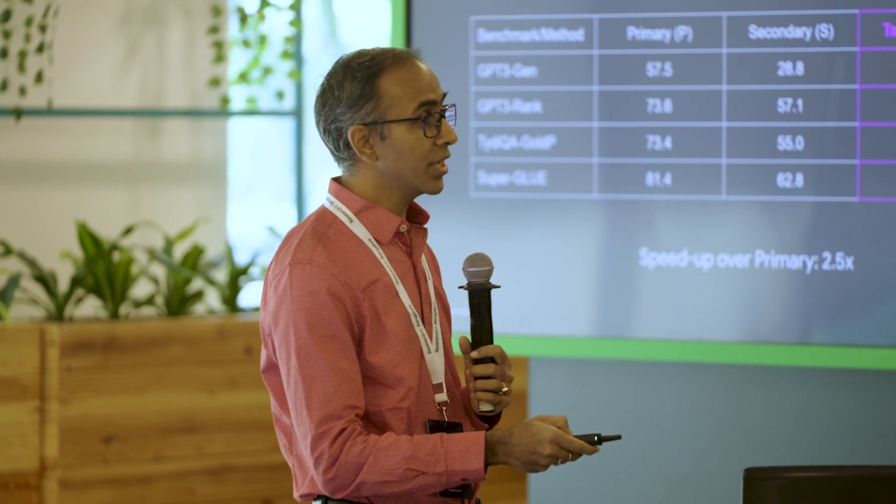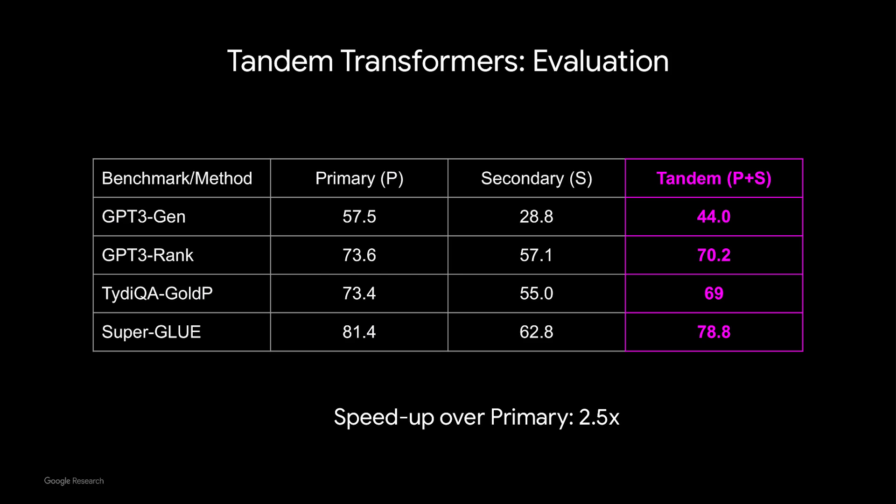But still here we are fighting two battles: we reduced accuracy to some extent while gaining latency, so it's not clear how to do an apples-to-apples comparison. So this problem we can reduce by saying let's fight only one battle — we will only fight the latency battle — and we want our output to be exactly the same as that of the primary model.